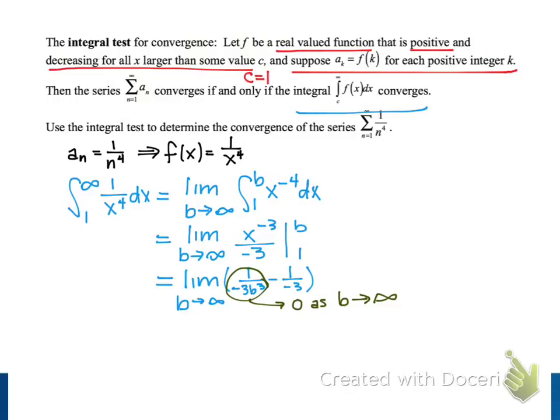So now we're left with 0 minus negative 1, 0 minus 1 over negative 3. And so that simplifies to just 1 third. And so that's the value of our limit as b approaches infinity.